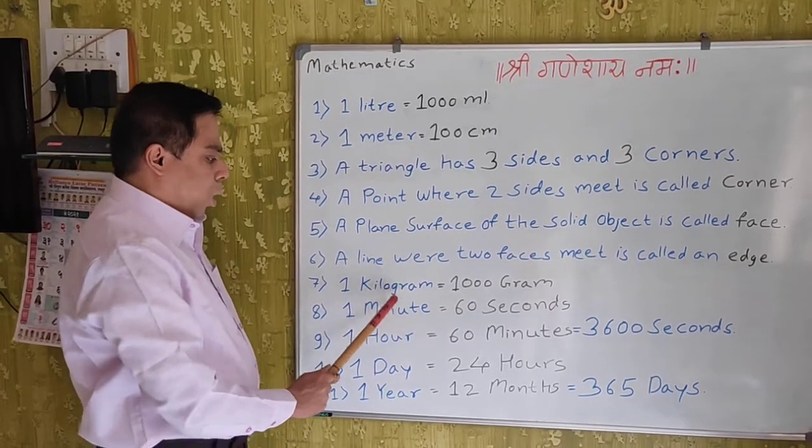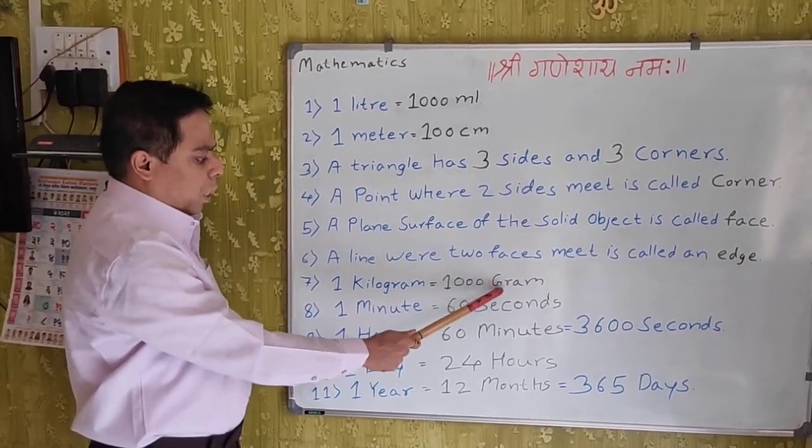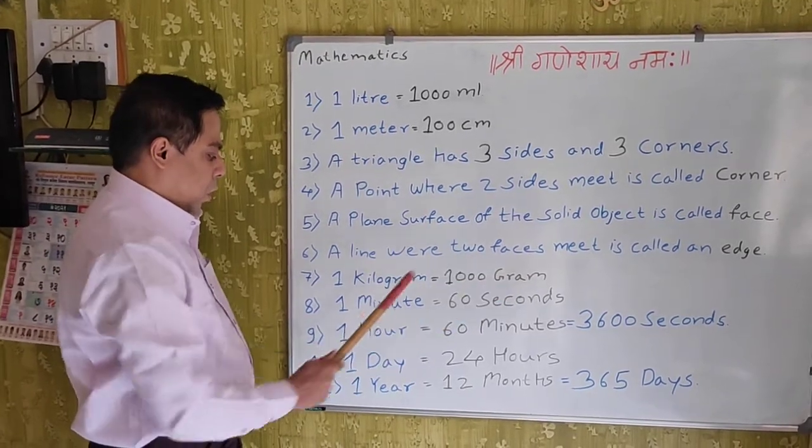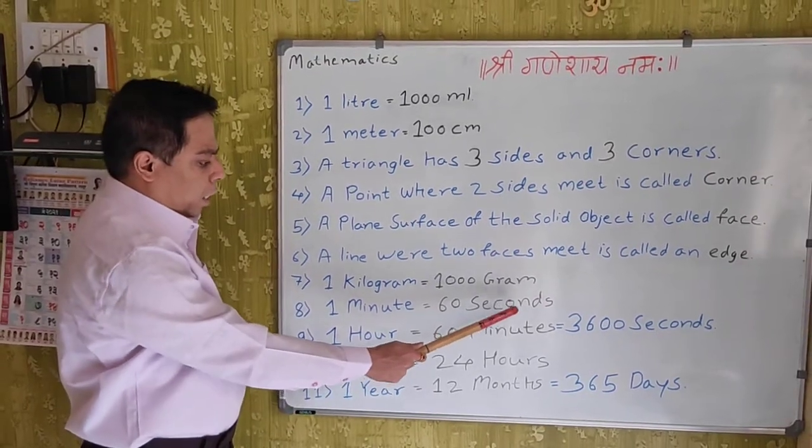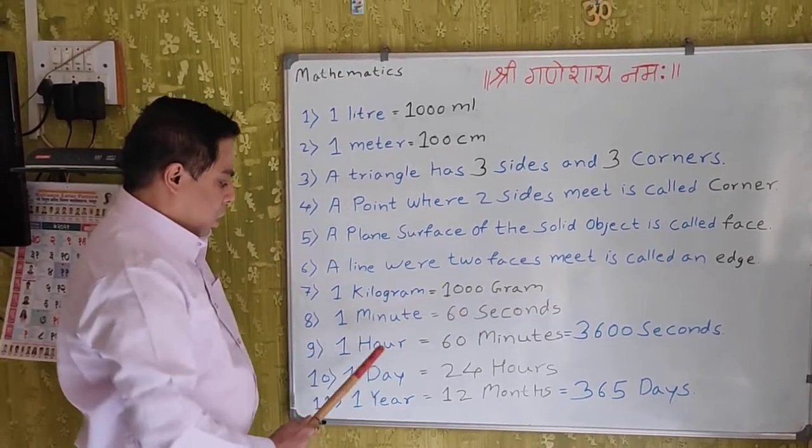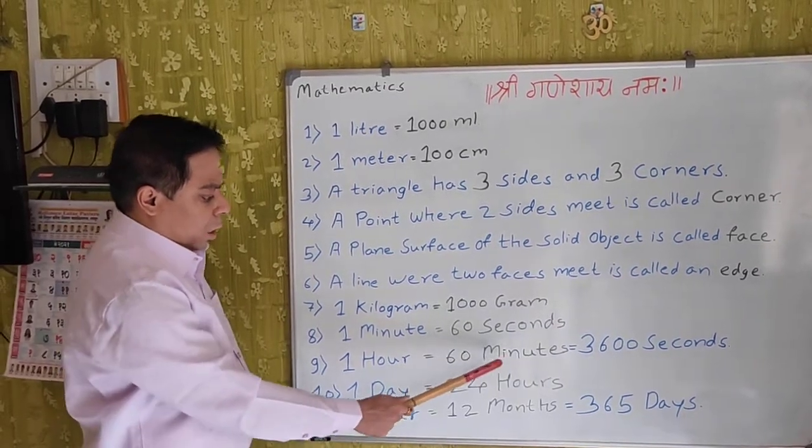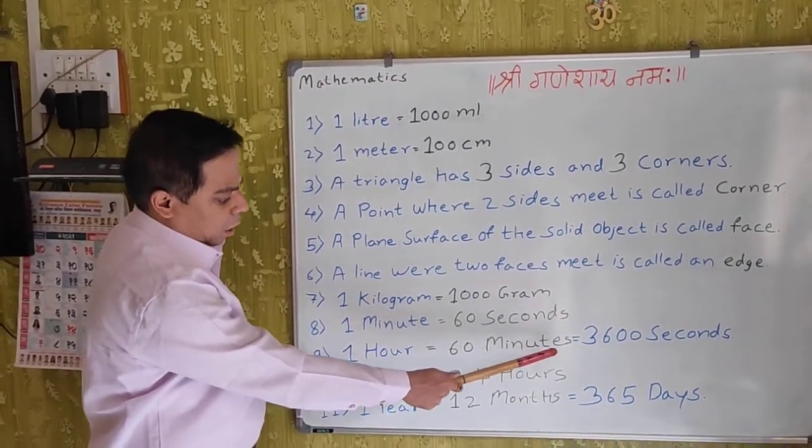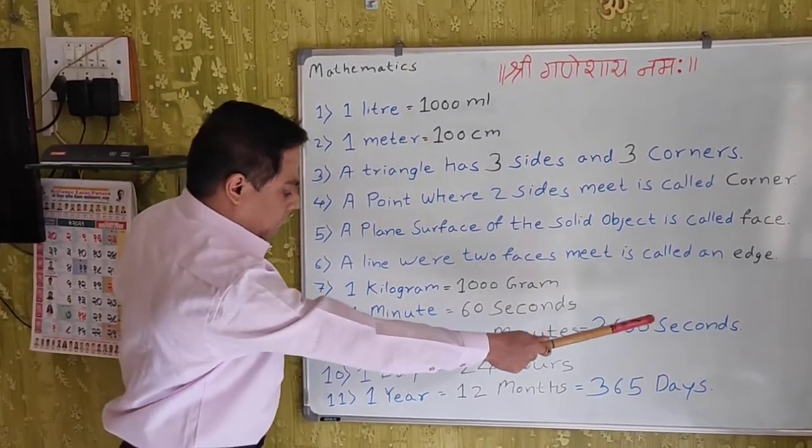1 kilogram is equal to 1000 gram. 1 minute is equal to 60 seconds. 1 hour is equal to 60 minutes. 1 day is equal to 3600 seconds.